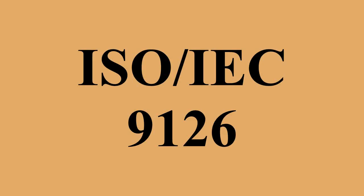ISO IEC 9126 was issued on December 19, 1991. On June 15, 2001, ISO IEC 9126-1991 was replaced by ISO IEC 9126-2001. On March 1, 2011, ISO IEC 9126 was replaced by ISO IEC 25010-2011 Systems and Software Engineering, Systems and Software Quality Requirements and Evaluation, System and Software Quality Models. Compared to 9126, Security and Compatibility were added as main characteristics.